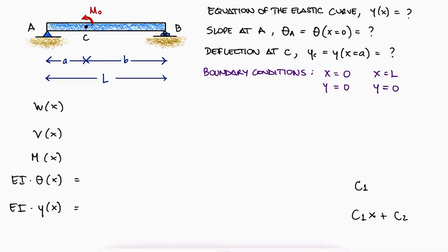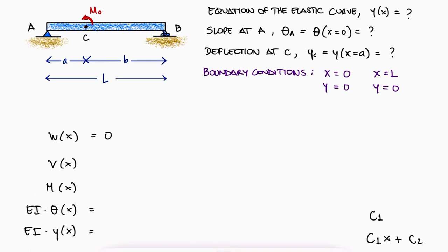Since there is no distributed load applied to the beam, W of x is equal to 0. The integral of 0 will just be the integration constants, which we know are the external point loads for V of x.